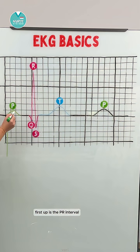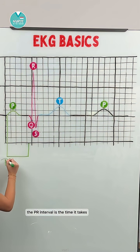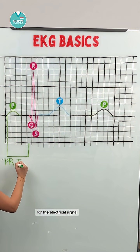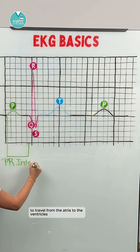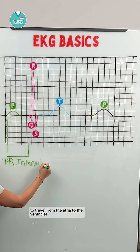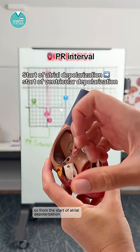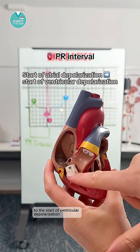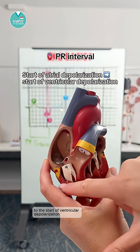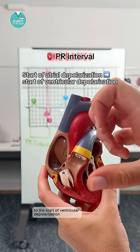First up is the PR interval. The PR interval is the time it takes for the electrical signal to travel from the atria to the ventricles — so from the start of atrial depolarization to the start of ventricular depolarization.